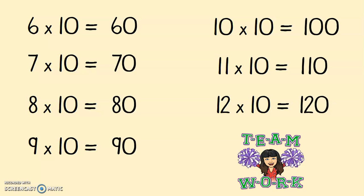Now I want you to try and write the full times table on a piece of paper. You can go back on the video and look at how Mrs Mitchell did it — start at 0 all the way to 12. 0 times 10 equals 0, and the last one will be 12 times 10 equals 120. Good luck, and I hope you learned something new today.